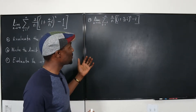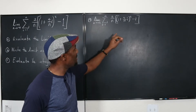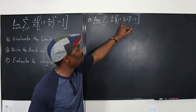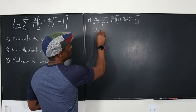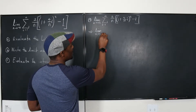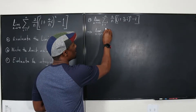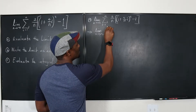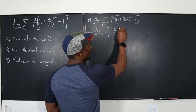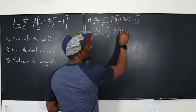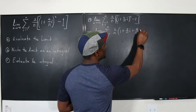We have the Riemann sum and we're supposed to take the limit. We just have to do some algebra — it's normal. You want to expand this, so distribute. This is going to be the limit as n goes to infinity of the sum from i equals 1 to n of 2 over n. If we distribute using foiling, this is going to be 1 plus 8 over n·i plus 16 over n² · i².